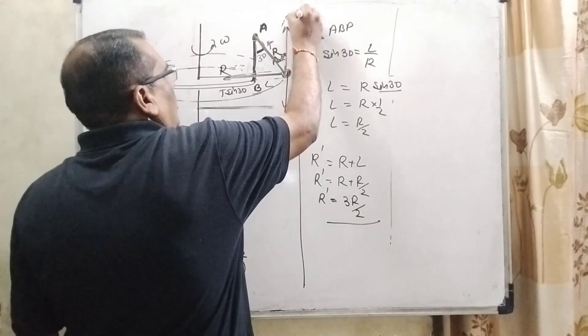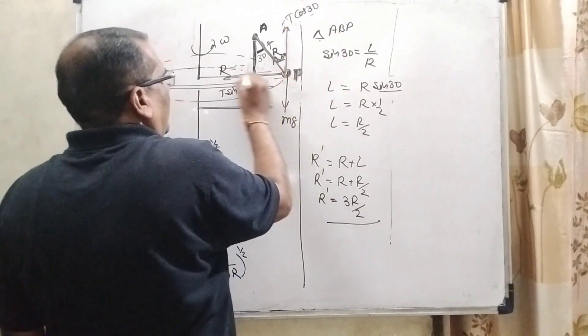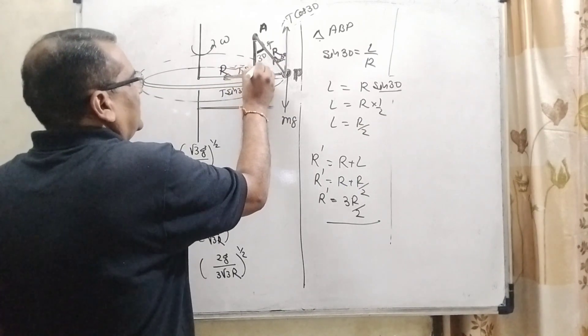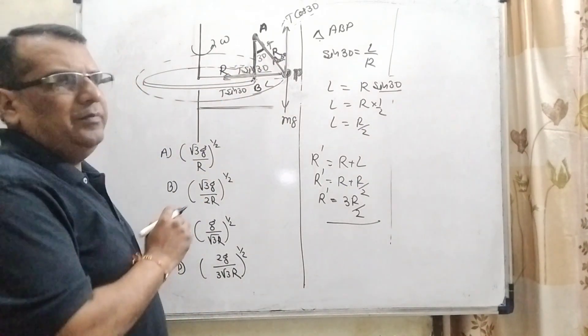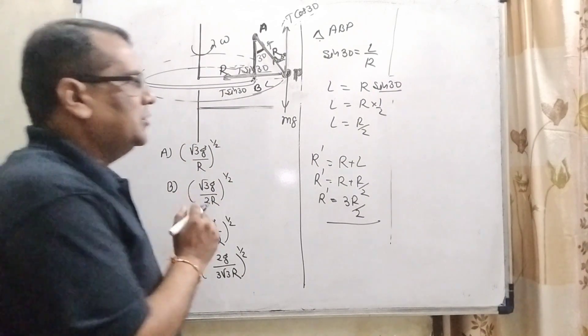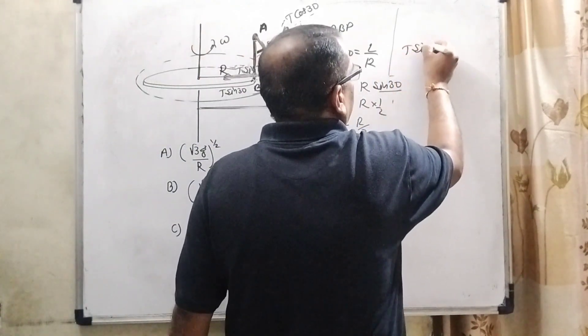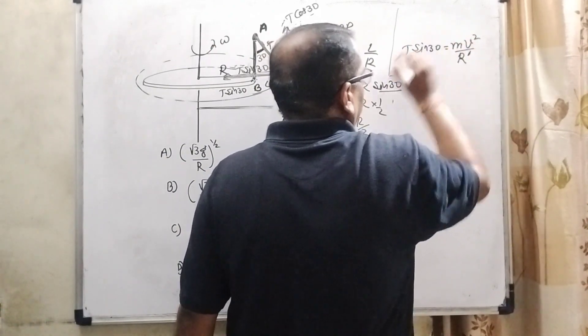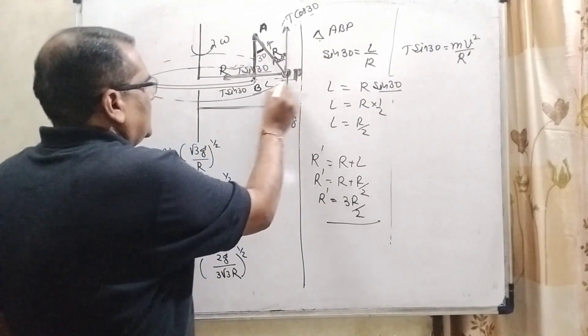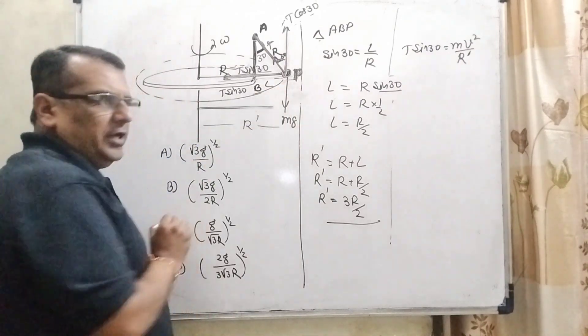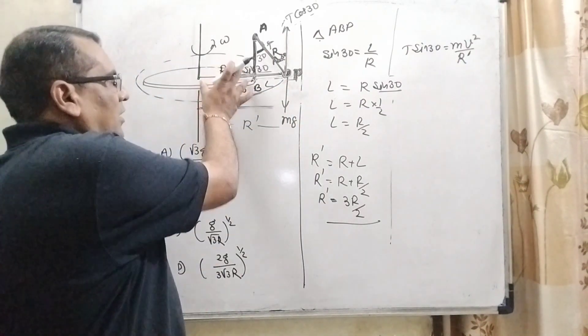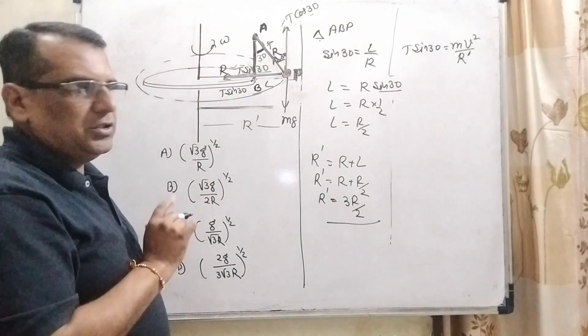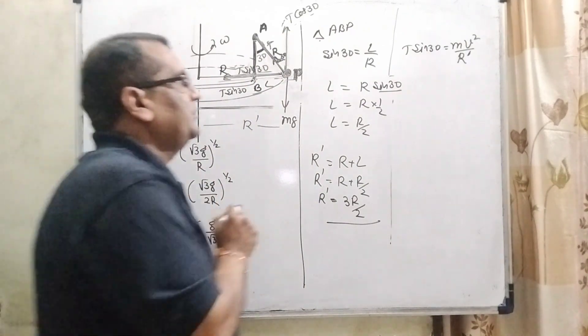So, here T cos 30 and in the direction of the center of this disc T sin 30 is acting and this T sin 30 is acting provides centripetal force. So, here T sin 30 is equal to M V square upon R dash because here circular motion is making only R dash. Not R because disc is moving that is rotational but this pendulum is moving that is circular motion. This is very important point.